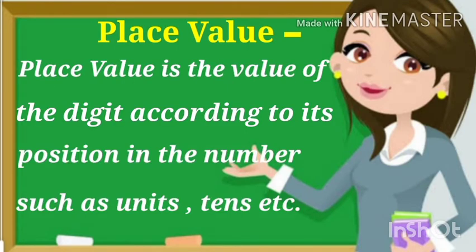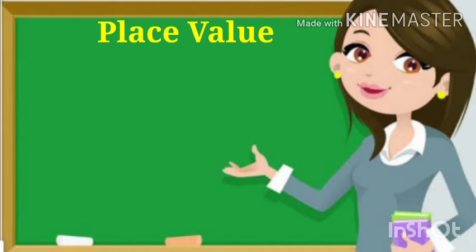Place value is the value of the digit according to its position in the number such as units, tens, etc. To know the position of the given number or to understand how to calculate the place value of the given number, let's see some examples.